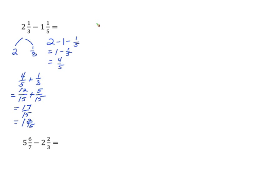So again we'll rewrite the problem: two and one-third minus one and one-fifth. First we're going to subtract the whole. So two minus one is one, and we have one and one-third minus one-fifth.